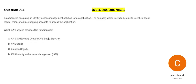So this question is about a company designing an identity access management solution for an application. The company wants users to be able to use social media. Whenever you see a question with a flavor of access management and internet access, it means something like using your Google account to access various applications — Facebook works through Google, Instagram works through Google, and so on.